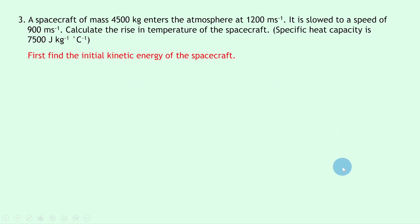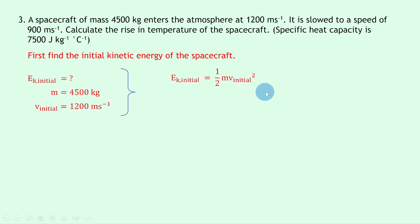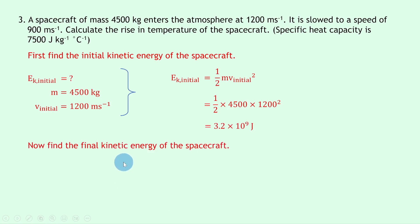First, we want to find the initial kinetic energy of the spacecraft. We're trying to find EK_initial; the mass m = 4500 kilograms and the initial speed is 1200 meters per second. Writing down our equation: EK_initial = ½mv_initial². Substituting in: ½ × 4500 × 1200² gives an answer of 3.2×10⁹ joules.